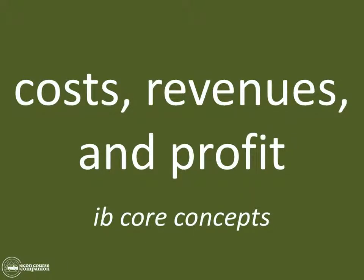Hey, everybody. Hope you're doing well today. This is Brad Cartwright with EconCourse Companion, and today we're going to take a look at the IB core concepts of the most important chapter in Theory of the Firm called Costs, Revenues, and Profit. These are the things the IB says you need to be able to do in order to feel confident going into the IB exam. You cannot miss these — they're great to look at before you study and when you're finished with the chapter to make sure you're ready for the exam.